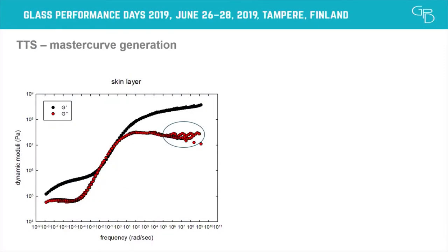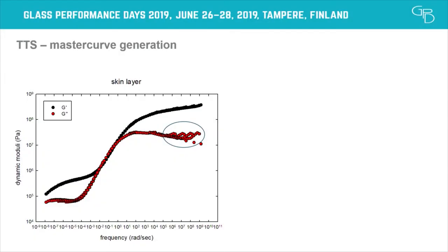Applying TTS to the skin layer: frequency sweeps from minus 30 to 90 degrees are shifted into one single master curve showing G' and G'' — elastic and viscous behavior — as a function of frequency, covering 17 decades of time. The TTS somewhat fails at very low temperatures, but this occurs in the loss modulus; the elastic modulus, which governs the final laminate's mechanical properties, is not significantly affected.